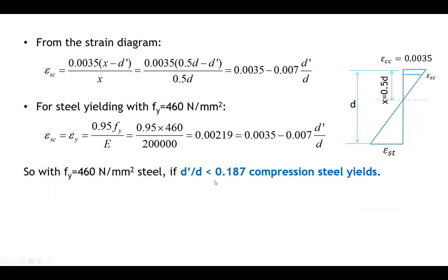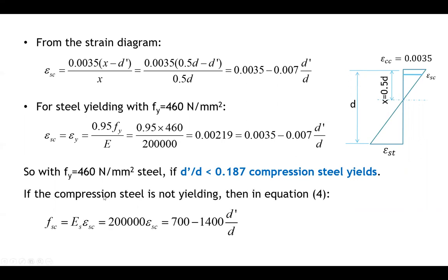Don't worry — we will see the design steps very clearly. If the compression steel is not yielding, then in Equation 4 we use Fsc = 700 − 1400 × (d'/d), which comes from Es × εsc = 200,000 × εsc from the strain distribution. So multiplying 200,000 by the strain expression gives Fsc = 700 − 1400 × (d'/d).